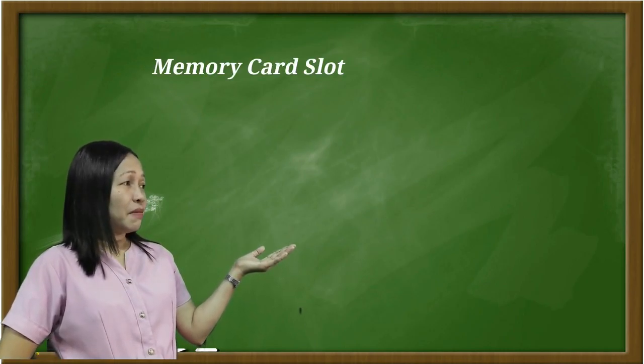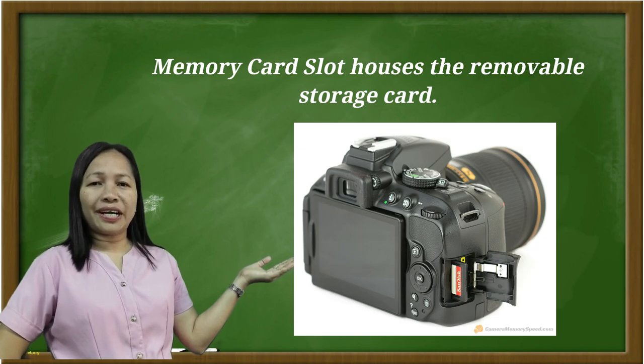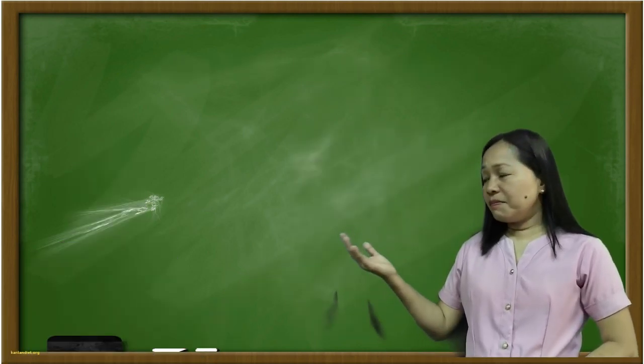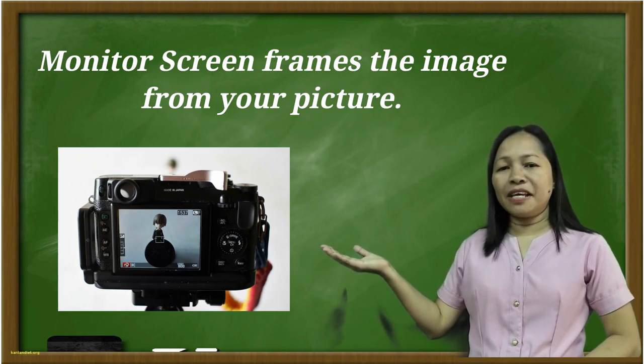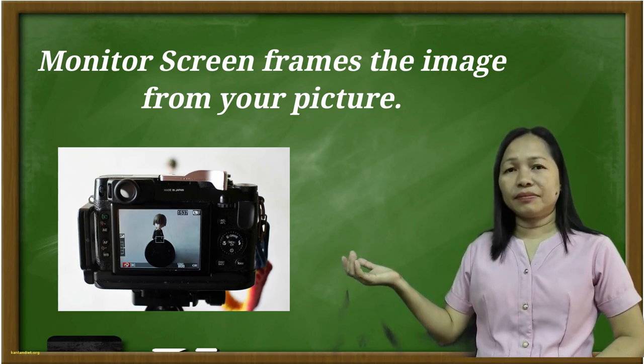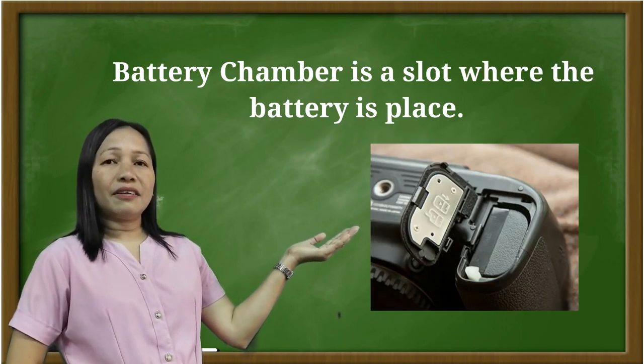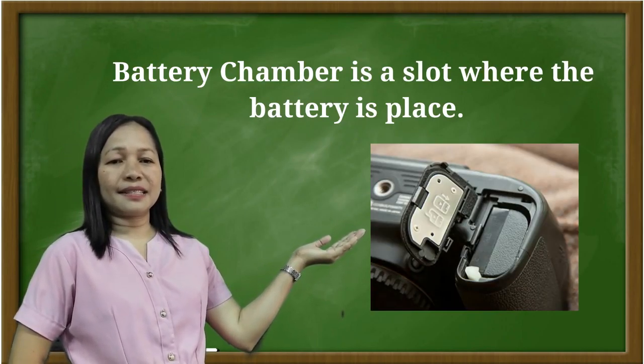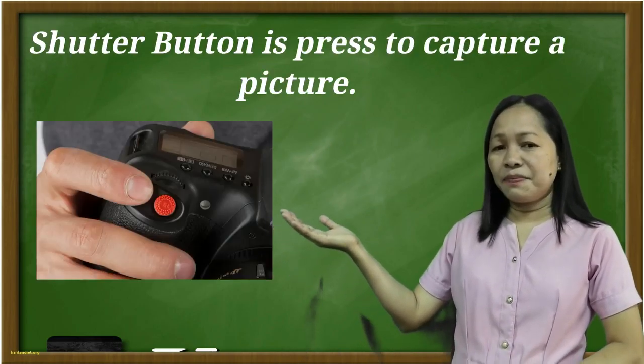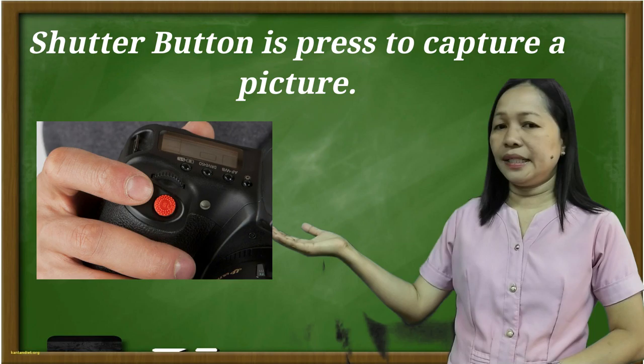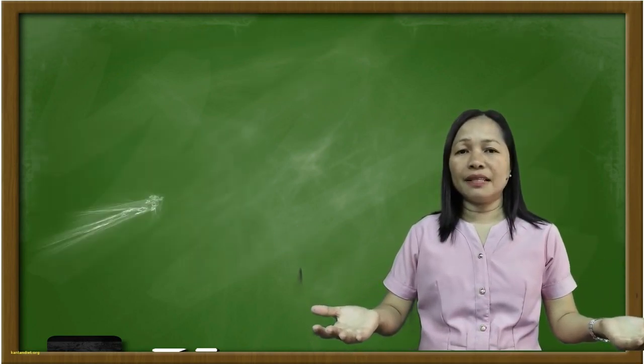The next one, memory card slot, houses the removable storage card. The fifth one is monitor screen, which frames the image for your picture. Next is the battery chamber. It's a slot where the battery is placed. And the last one is shutter button. It's pressed to capture a picture. So you know now the different parts of a camera and their functions.